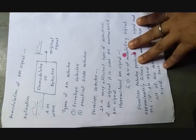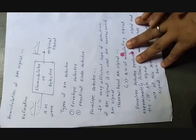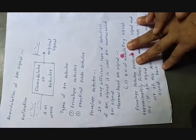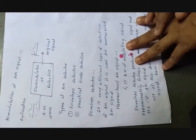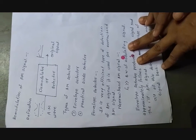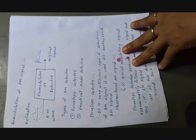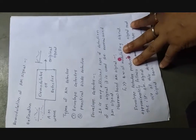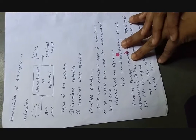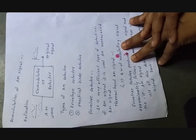Today we are going to study analog communication engineering. In that subject, we studied all the things related to modulation. But today our second section starts — the demodulation section. Our fifth chapter is related to AM and FM detectors.